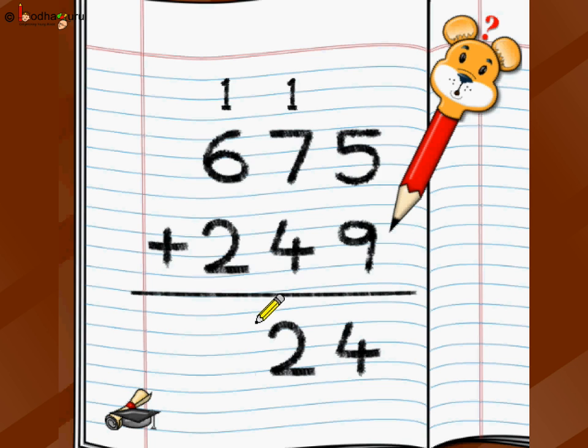And remember, you don't write 12 as 1 here and 2. You write 1 here, on the neighbor to its left neighbor, and 2 here. So 1 plus 7 is 8, 8 plus 4 is 12. Of the 12, 2 you write here and 1 to the left neighbor.